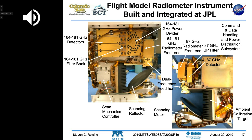How does Tempest perform signal processing? Does it have a digital back-end? Tempest does not have a digital back-end. We have five-millisecond samples on each of the five channels. Our total data rate, including housekeeping, is just over 10 kilobits per second continuously — we bring all that data down to the ground.